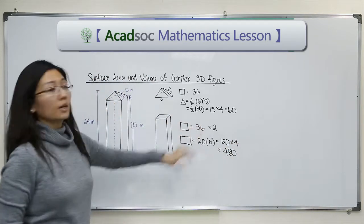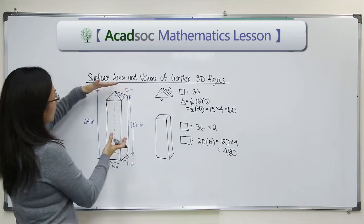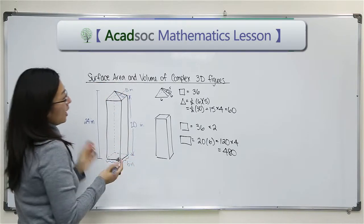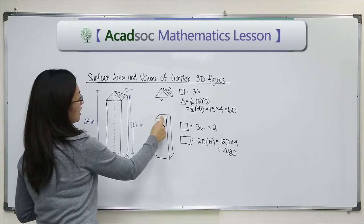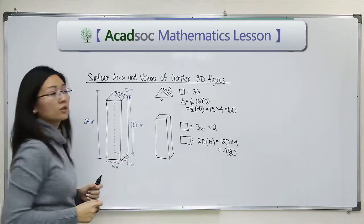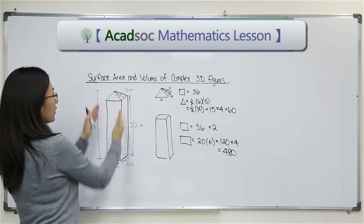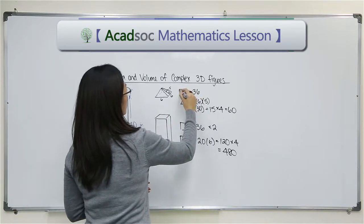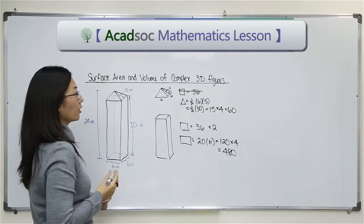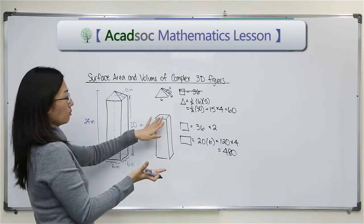Now there's a reason why I did this, because when I put the pyramid on top of that prism, essentially this base and this space, I don't need to count because that's not the surface of that monument. So essentially, we could ignore this for the surface area because that's touching the prism.